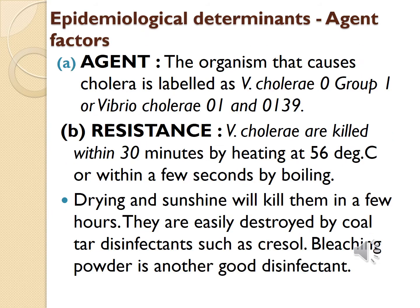Now we will discuss the epidemiological determinants of cholera, starting with agent factors. There are many different strains of vibrios; however, the organisms that cause cholera are labeled as Vibrio cholerae O1 and Vibrio cholerae O139. These are also labeled as the epidemic strains because they are responsible for cholera epidemics.